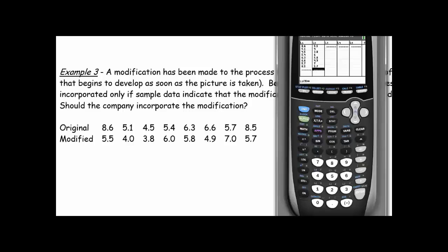A matched pairs test would be like a before and after thing and since I can't take the same picture on the same piece of film and develop it twice, that doesn't really apply to this. It makes more sense then that they just did eight pictures of the original and eight pictures of the modified and then that's the data they're sharing with us. So they actually are independent of each other. So it's not that it was 8.6 before and 5.5 after. It's that those are just two groups of two different times and they're not really partnered up. It's not like the same picture was developed in 8.6 seconds and then using the other process was 5.5. So it really is a two independent sample t-test.